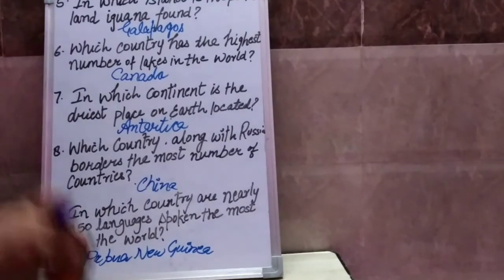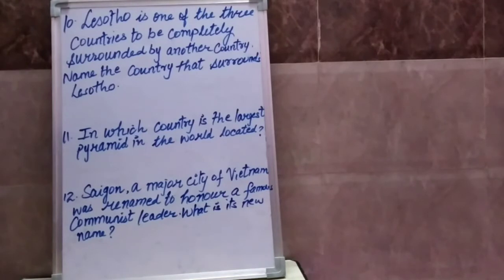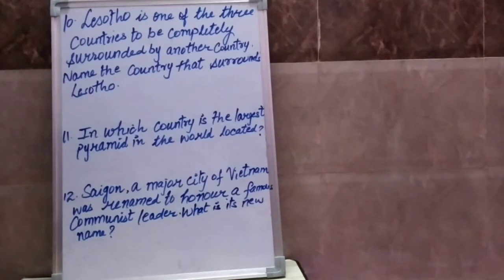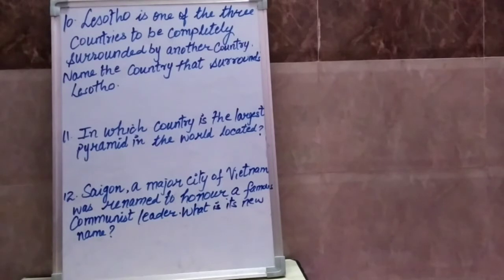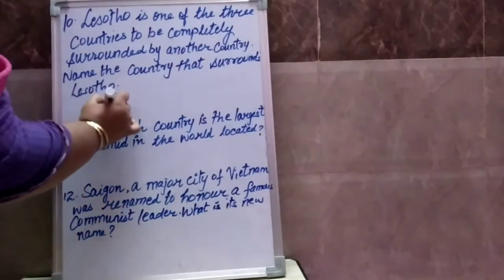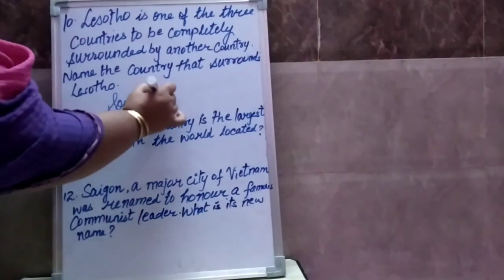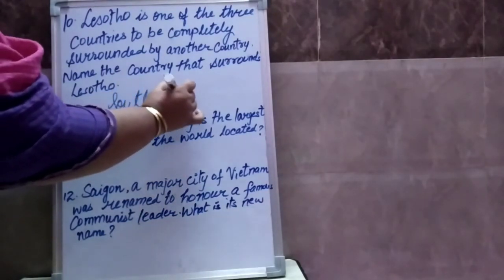Question number ten: Lesotho is one of the three countries to be completely surrounded by another country. Name the country that surrounds Lesotho. Means Lesotho teen deshon mein se ek hai jo poori tarah se doosre desh se ghira hua hai. Lesotho ko ghiarne wale desh ka naam bataiye. Your answer is South Africa.